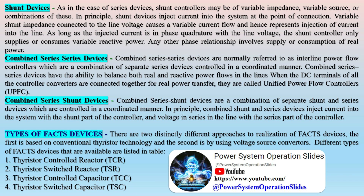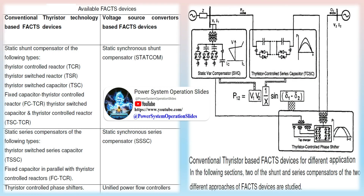Combined series-series devices, normally referred to as interline power flow controllers, are a combination of separate series devices controlled in a coordinated manner. They have the ability to balance both real and reactive power flows in the lines. When the DC terminals of all the controller converters are connected together for real power transfer, they are called unified power flow controllers (UPFC). Combined series-shunt devices are a combination of separate shunt and series devices controlled in a coordinated manner, injecting current into the system with the shunt part and voltage in series with the series part of the controller.